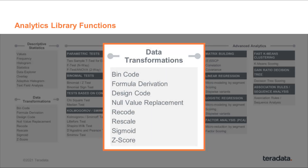Bin code leverages those histogram algorithms from the descriptive stats family to represent a continuous data element as a set of bins, as opposed to the actual value. You can do any kind of formula derivation you can think of. You can do design coding like one-hot encoding if you need to represent your data in a numeric fashion as a series of zeros and ones. Null value replacement can be done on the raw data or as a result of a transformation generating a null value. You can recode categorical data elements, rescale continuous data elements, and do statistical transformations like sigmoid and z-score.